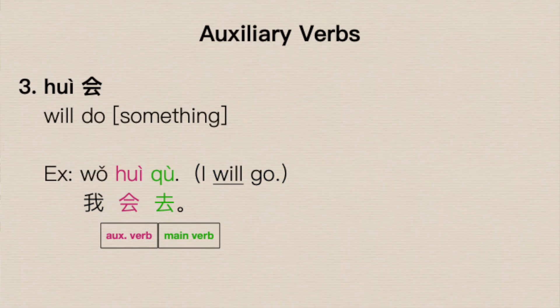Finally, 'I will go' — 我会去. This is definitive; you've told this person it will happen. 会 (huì) is our auxiliary verb, and 去 is the main verb.